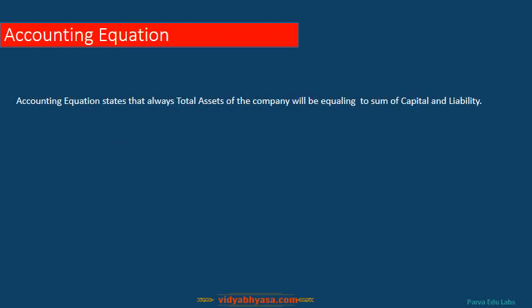Now let's look at the accounting equation. The accounting equation states that total assets of a company will be equal to the sum of capital and liabilities. Very simple logic: a company can spend only as long as an amount is invested by someone, or someone gives material on credit, or someone gives a loan.